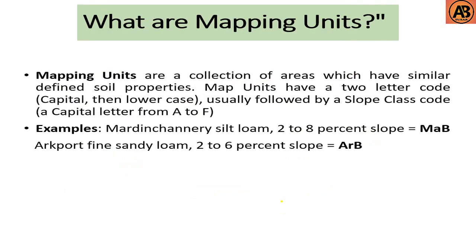Mapping units are a collection of areas which have similar defined soil properties. Map units have a two-letter code — capital then lowercase — usually followed by a slope class code, which is a capital letter from A to F. For example, Martin senaris silt loam, two to eight percent slope, is coded as MaB. Another example: Arcport fine sandy loam, two to six percent slope, is coded as ArB — first letter capital, then lowercase, then capital.